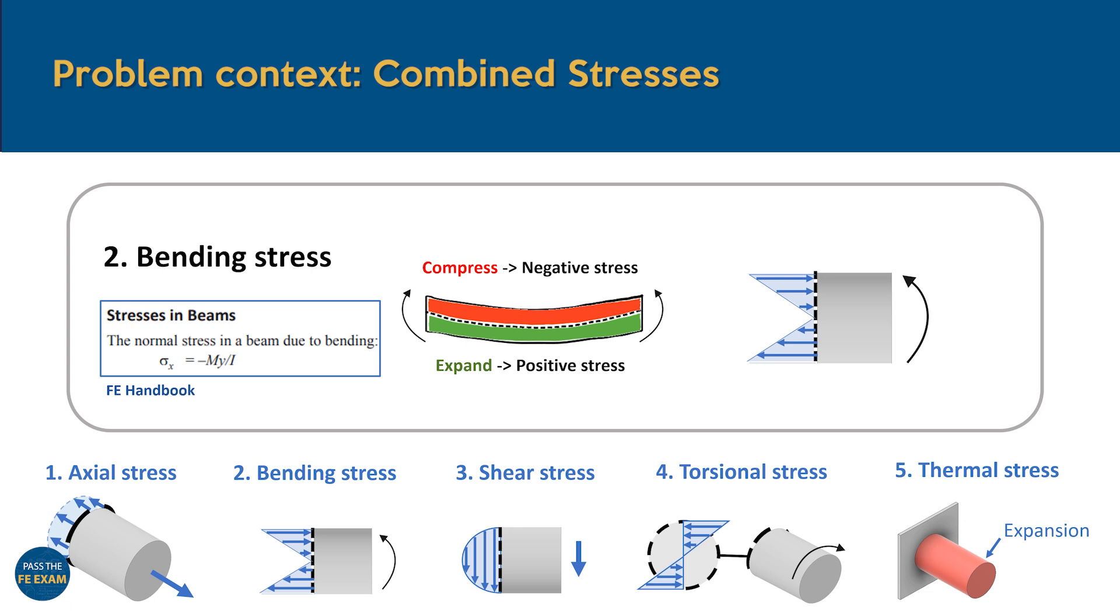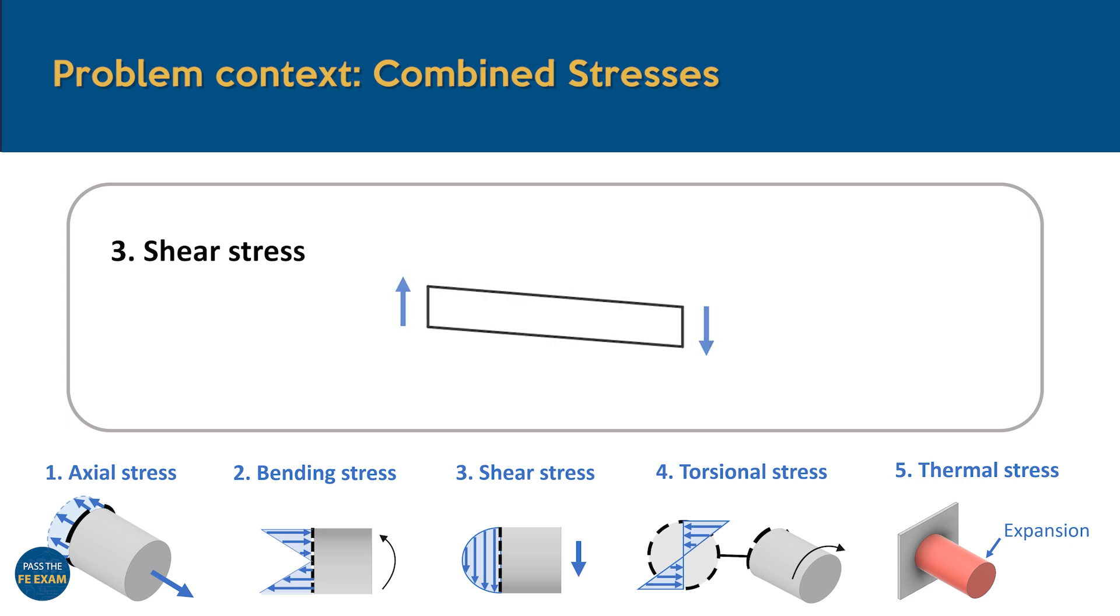Now, let's talk about transverse shear stress. This type of stress happens when opposing forces act along the beam's cross-section, like the forces shown here. These forces try to slide the layers of the material past each other, causing the beam to deform. However, the stress distribution isn't normal across the section. It follows a parabolic pattern, with zero stress at the outer edges and maximum stress near the center. This happens because the outer layers move less, while the inner layers experience more sliding. The greatest resistance to this sliding occurs at the neutral axis, which is why the stress is highest here. For reference, we've also included the FE handbook formula used to calculate this shear stress.